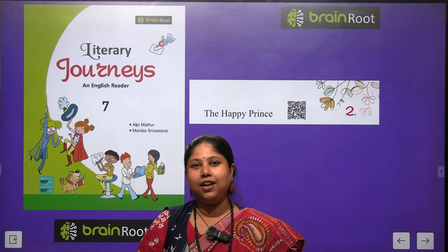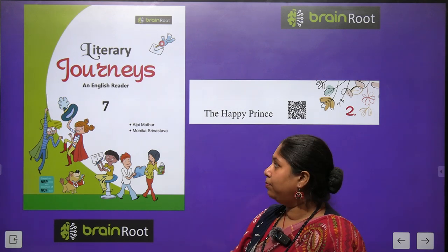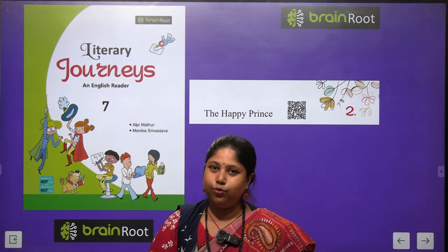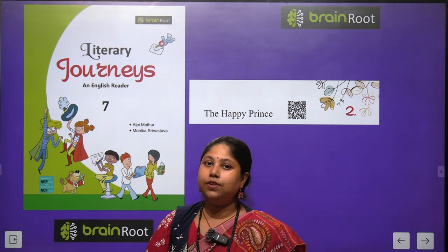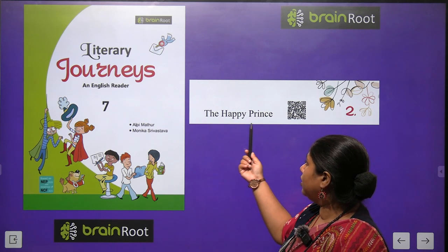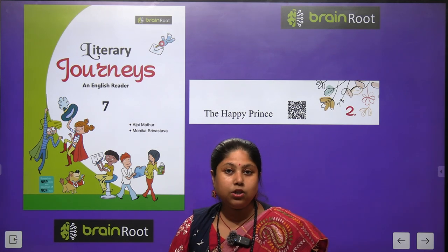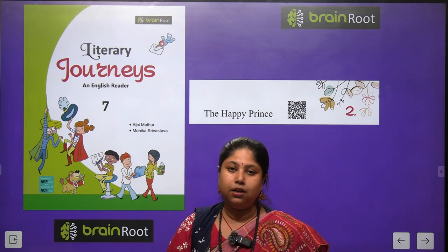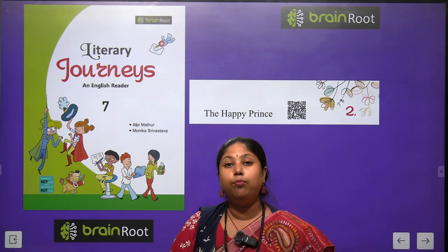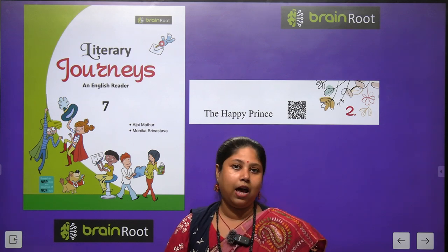Hello kids and welcome to your English class. We are going to start a very beautiful journey with our book Literary Journeys, an English Reader for class 7 by Brainroot Publications. Today we are about to begin with Chapter number 2. The title of the chapter is Happy Prince — a very interesting story about a prince who was always happy. But one day, he became very sad. So let's start the story of Happy Prince.